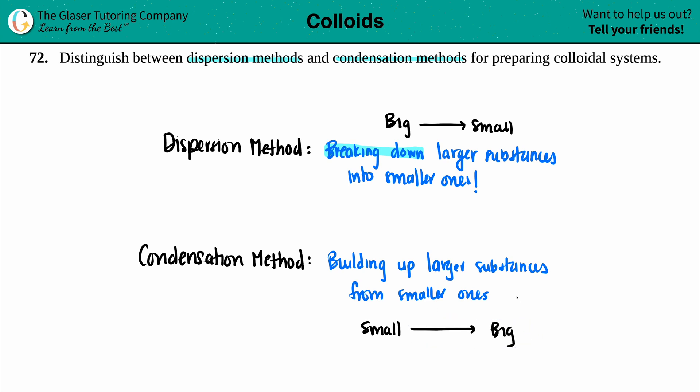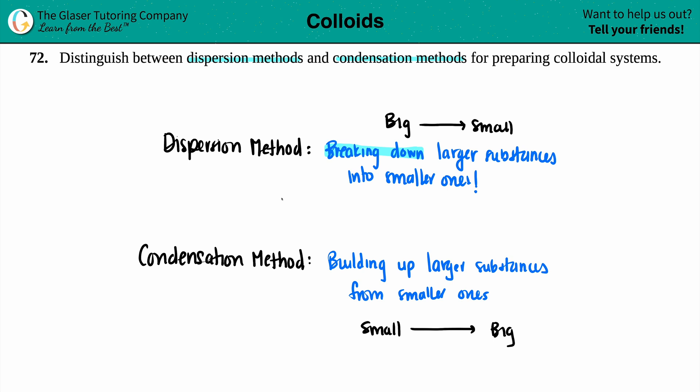So those are the two different types of methods: you're either going to take large substances and break them down into smaller ones — that's dispersion — or you're going to take smaller ones, put them all together, and make a larger one — that's the condensation method. Small to big and big to small. They are opposites of each other.